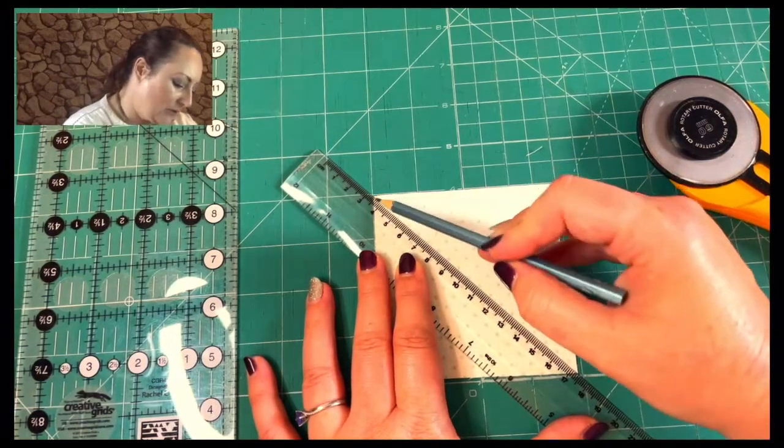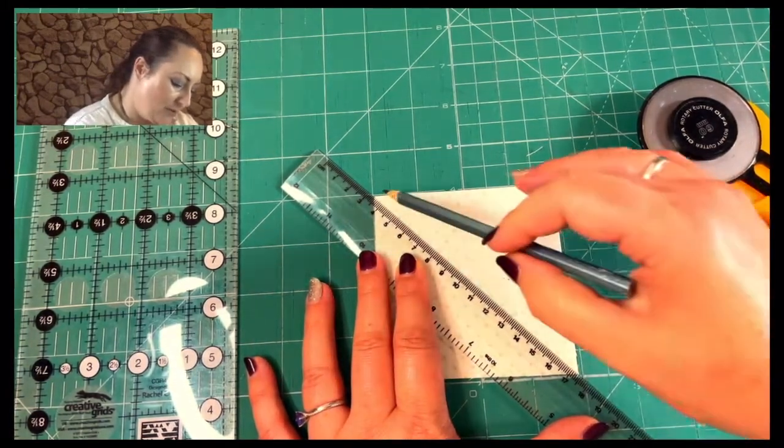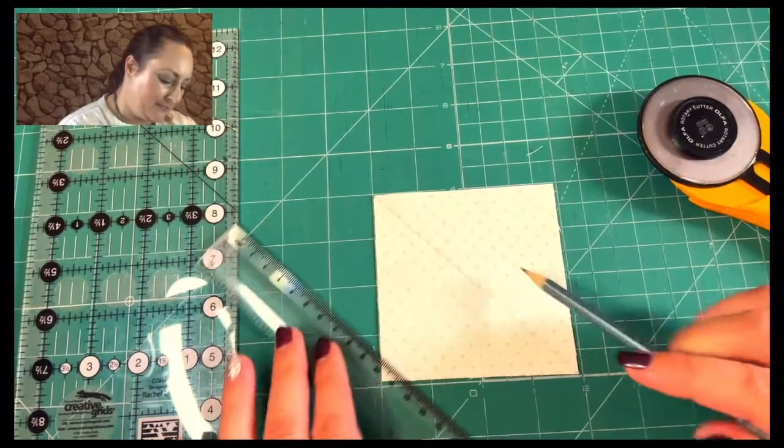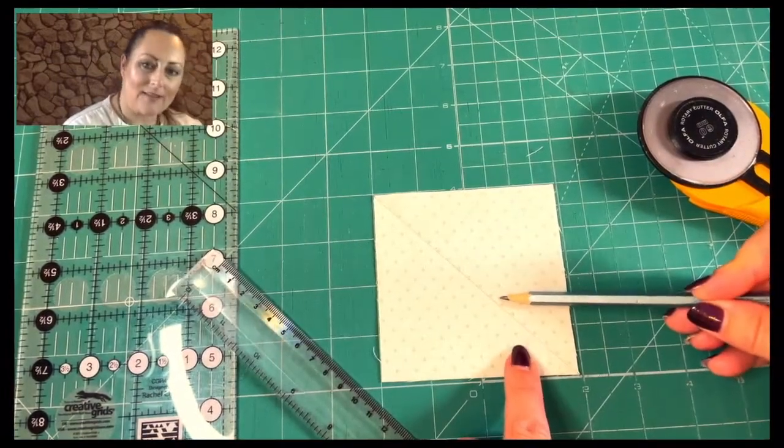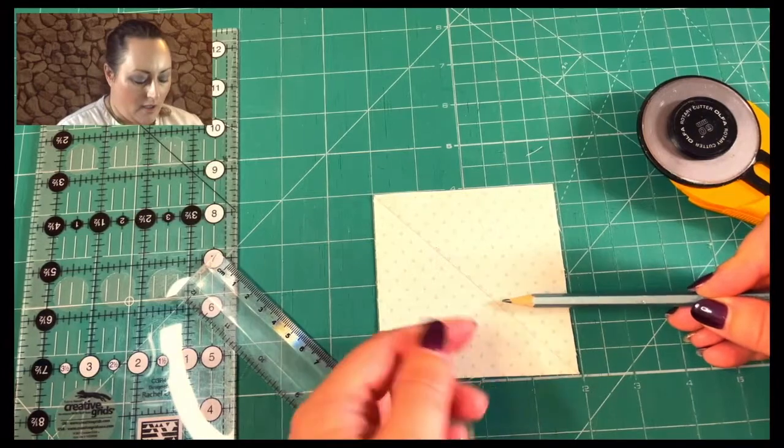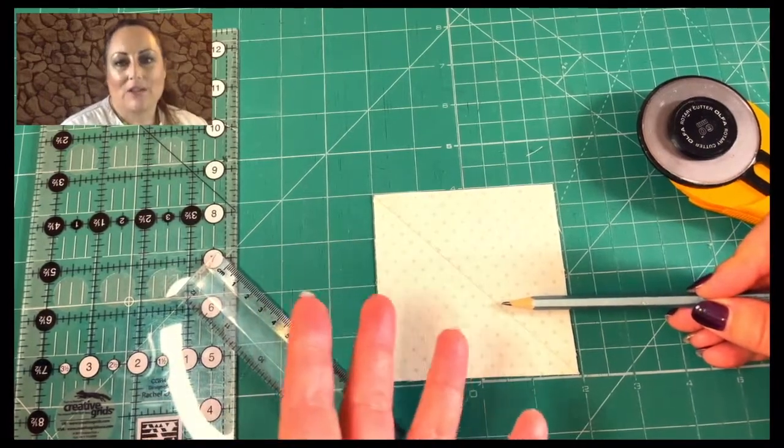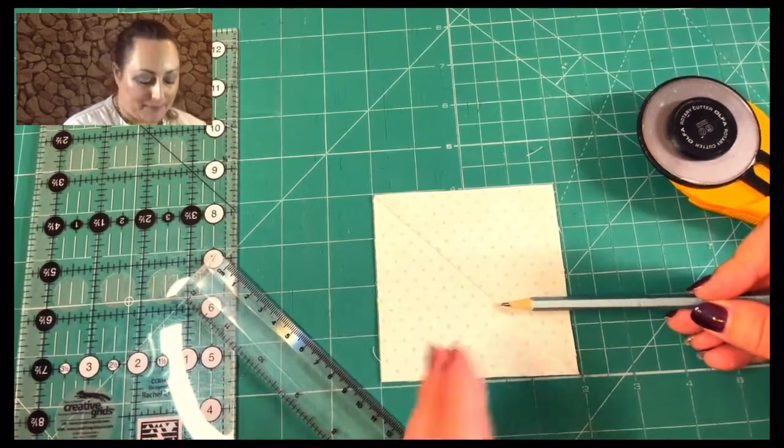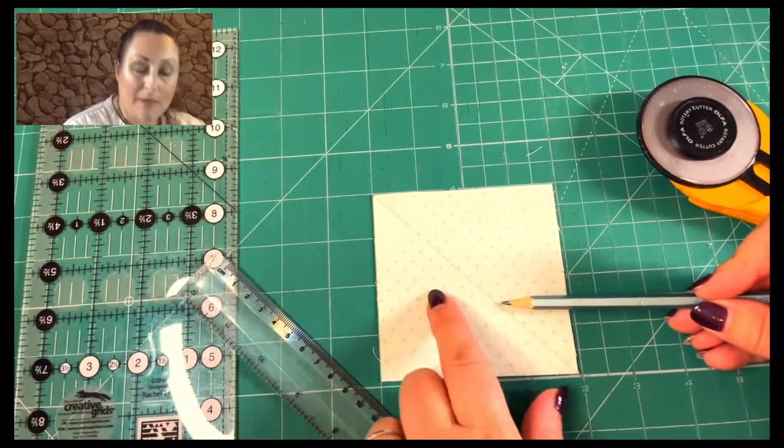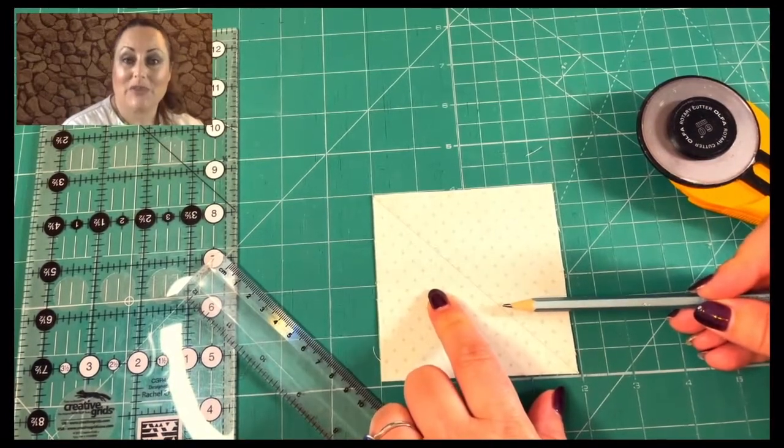And then we're going to draw ourselves a thin pencil line. Okay. So can you see that there? It doesn't need to be very hard or very dark. It's just enough for you to see. So that's what we're going to do now. And then we're going to use that to guide us for sewing in a minute.